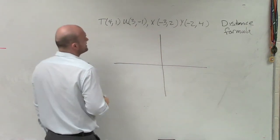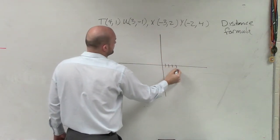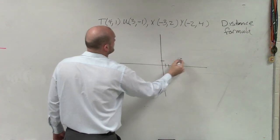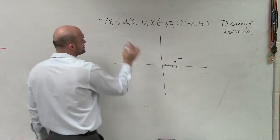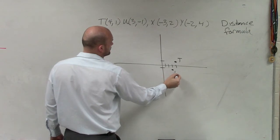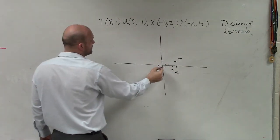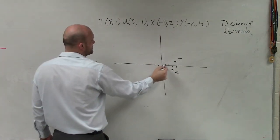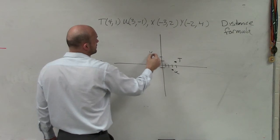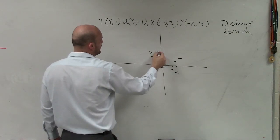I go and plot the points. First point I plot is T: (4, 1). Next point is U: (3, -1). X: (-3, 2). And Y: (-2, 4).